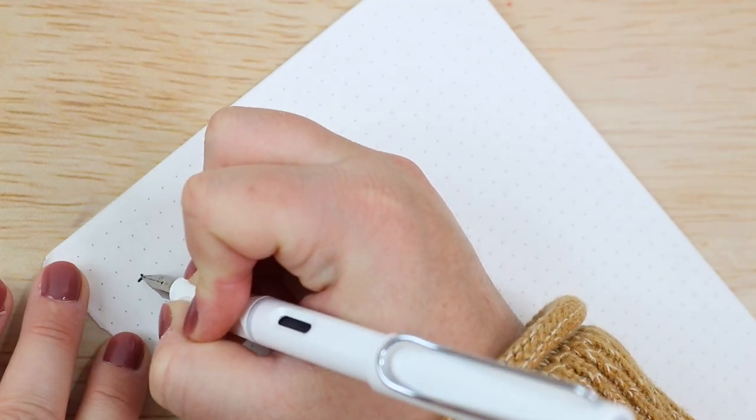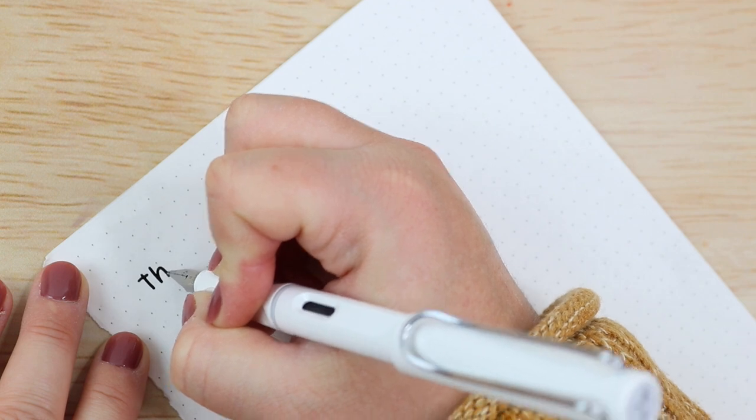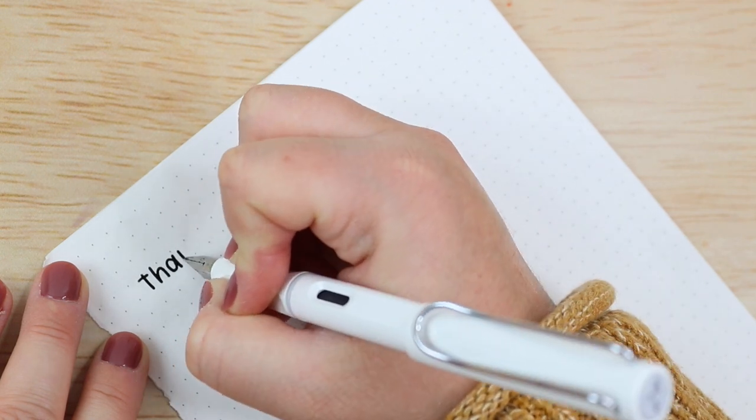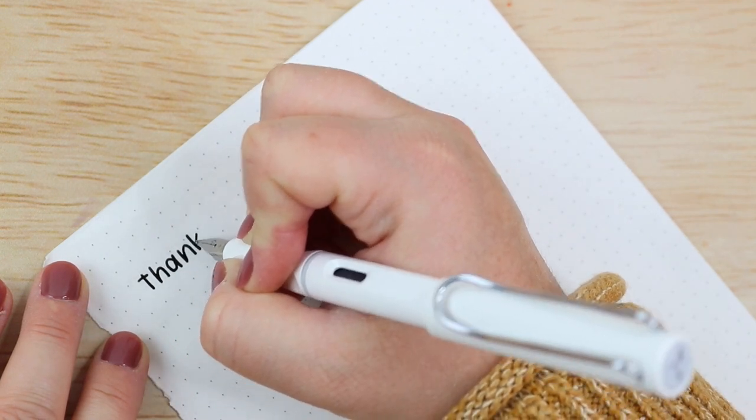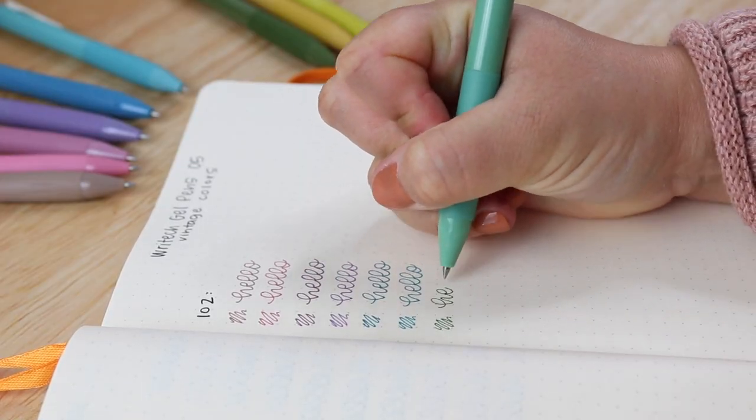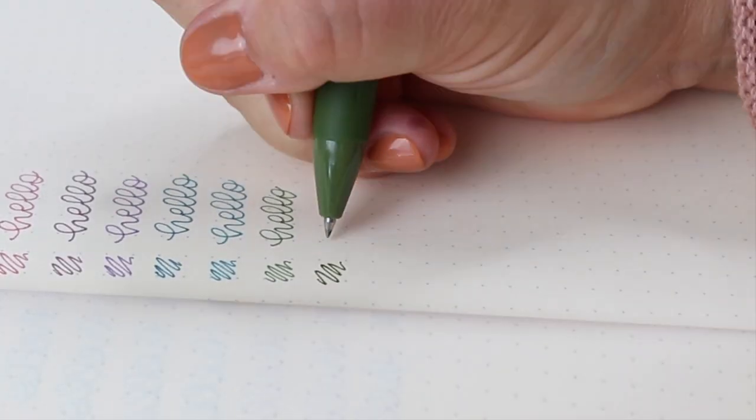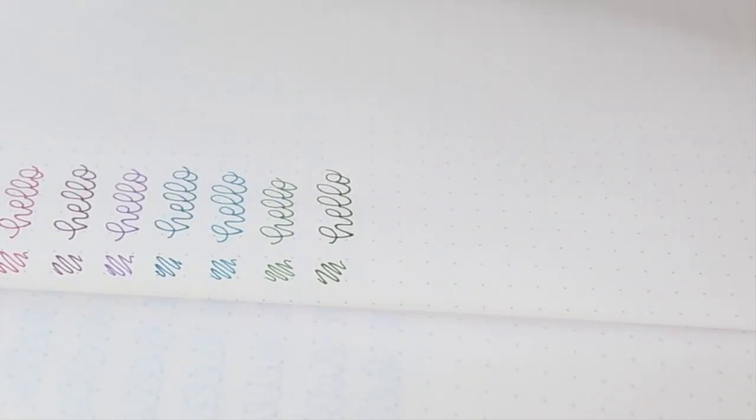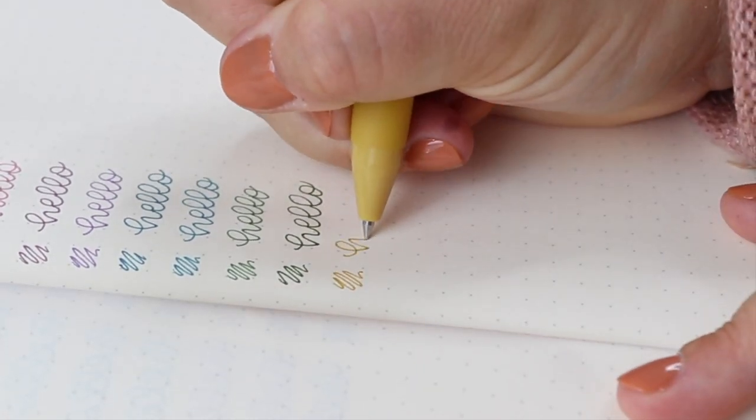The first hand lettering mistake that you might be making is that you might be trying to hold all of your hand lettering tools the same way, and I'm actually not talking about the angle as much as I'm talking about the way you actually hold the pen in your hand. Now not all pens or hand lettering tools are the same, so it would kind of make sense that some might fit a bit differently in your hand, right?